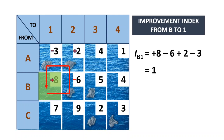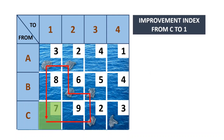This value of 1 means that the cost of carrying one unit on route B1 increases by 1. So if you were to add 10 units on this path, the cost would increase by 1 times 10. Next, let's look at the path from C to 1.